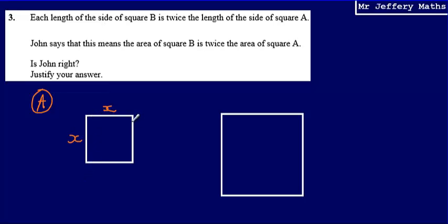I don't know what the lengths are, but I do know that on square B, the lengths are twice the length of the sides on square A. So if the lengths on square A are X, then on square B we can say that they are 2X.